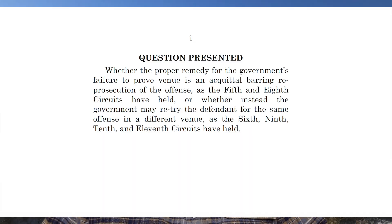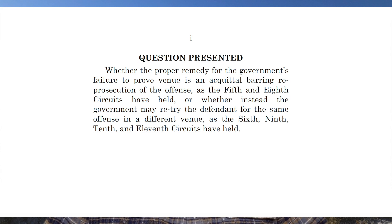Today we're going to talk about this U.S. v. Smith case. The petitioner, Timothy Smith, says this is the issue: whether the proper remedy for the government's failure to prove venue is an acquittal barring re-prosecution of the offense — as the 5th and 8th Circuits have held — or whether the government may retry the defendant for the same offense in a different venue, as the 6th, 9th, 10th, and 11th Circuits have held.